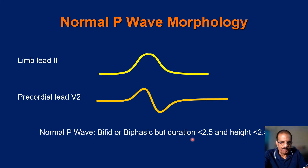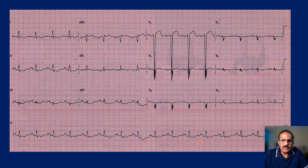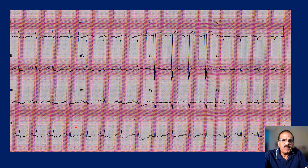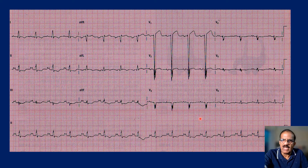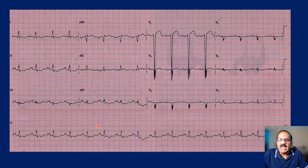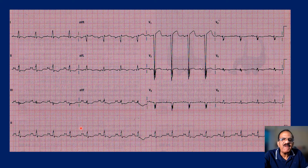Let me show you an example ECG. Looking at this strip, you can see PQRS complexes. There is also some ventricular hypertrophy pattern, but we are focusing on atrial enlargement. In limb lead II you can see a bifid P wave — it looks quite broad. And in V2 it is biphasic — you can see a clear downward deflection. So what do you think is the diagnosis?